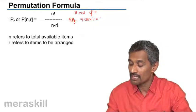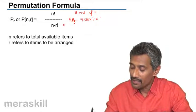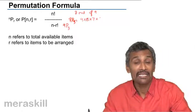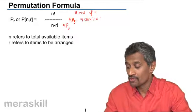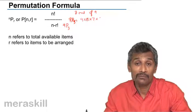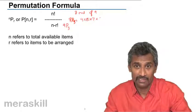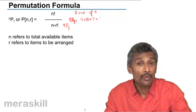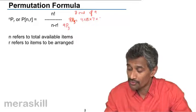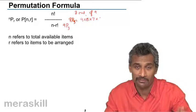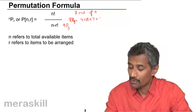9P3 actually means you're selecting three out of nine and arranging them. So you could select the first book — book number one, two, or three — and arrange it in a particular way. Then you're selecting the remaining. Now, which one you're selecting and arranging will change the order. So it's basically an arrangement of things. You're selecting and arranging them on a shelf.